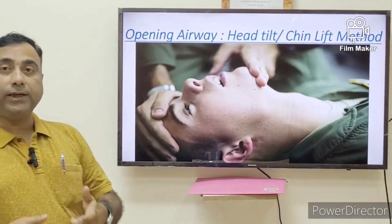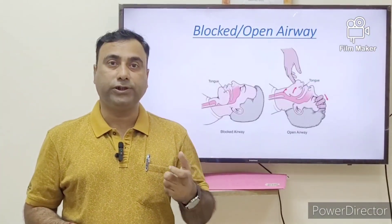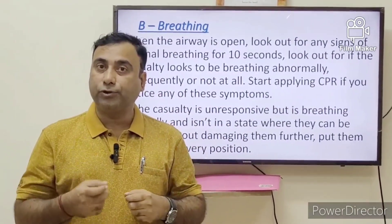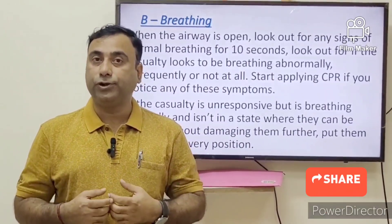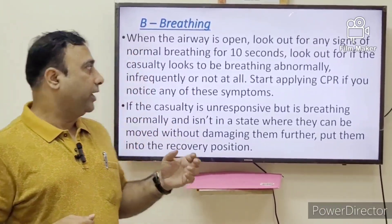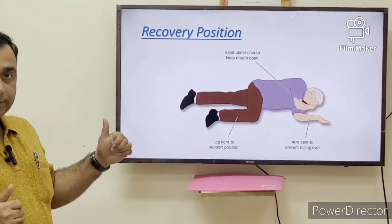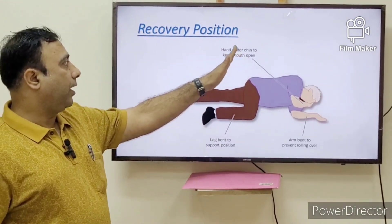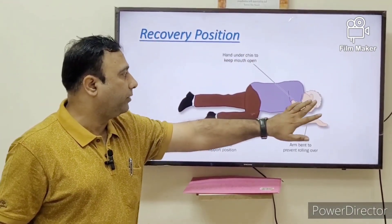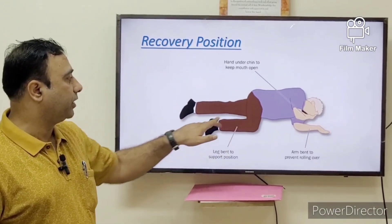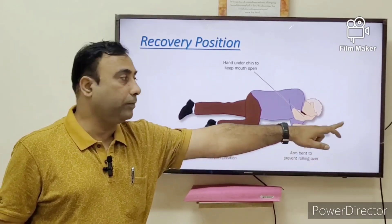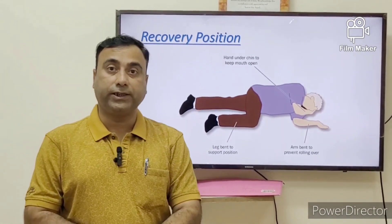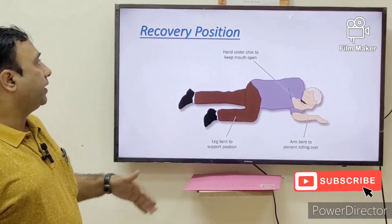After airway, B is for Breathing. Listen close to the casualty's mouth and nose with your ear to check whether they are breathing or not. Be alert — slow or interrupted breathing can confuse you. If breathing is correct, place them in the recovery position: one hand under the chin to keep the mouth open, one leg bent for support, the arm bent upward, and the other leg kept straight.